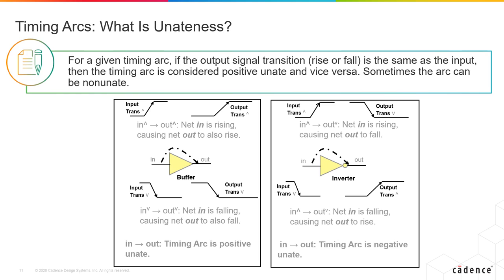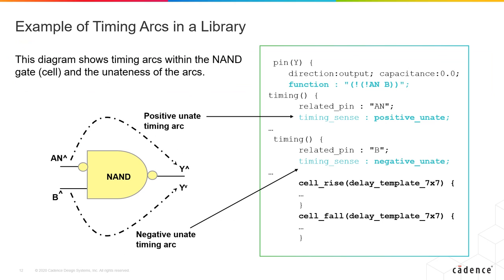So, for every input to output relationship, that is one arc. Every input-output combination forms a timing arc. Here you can see the different arcs of a NAND cell and their corresponding library timing sense attributes.